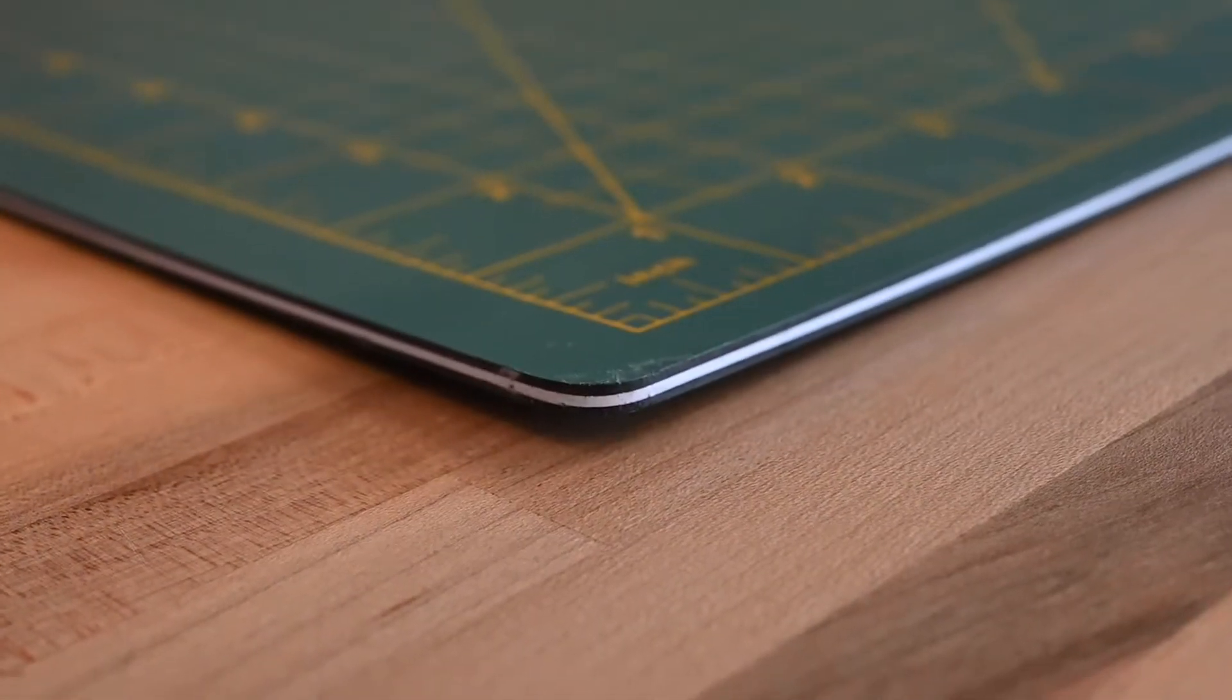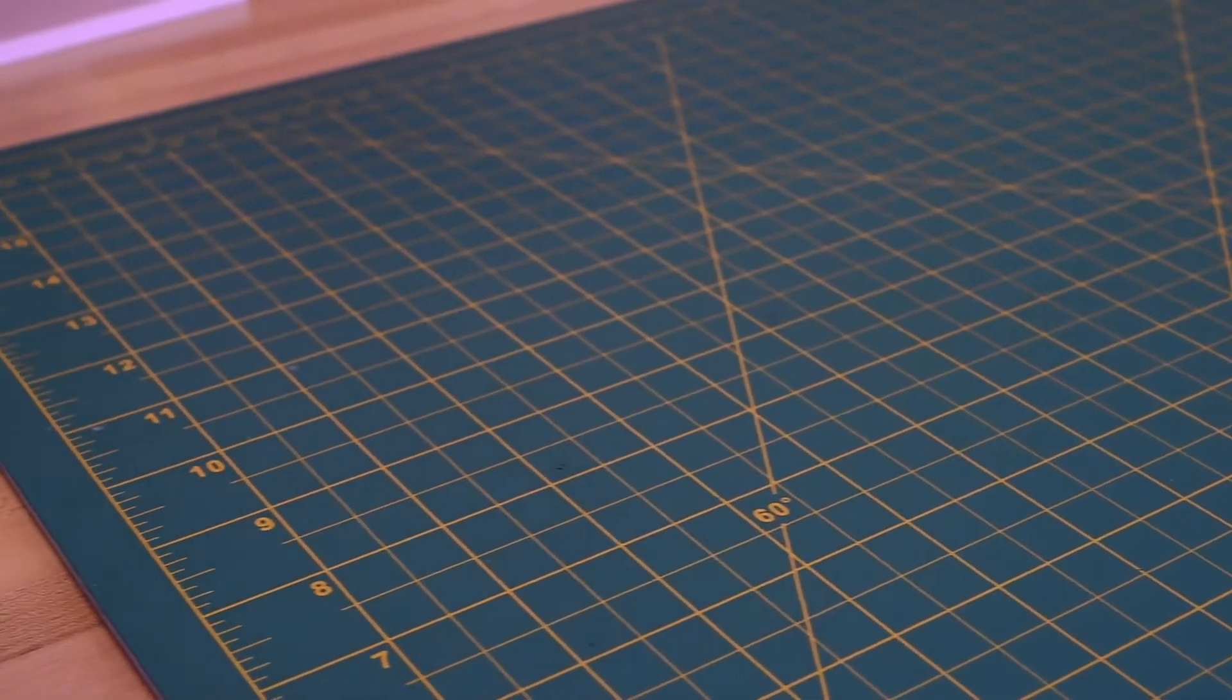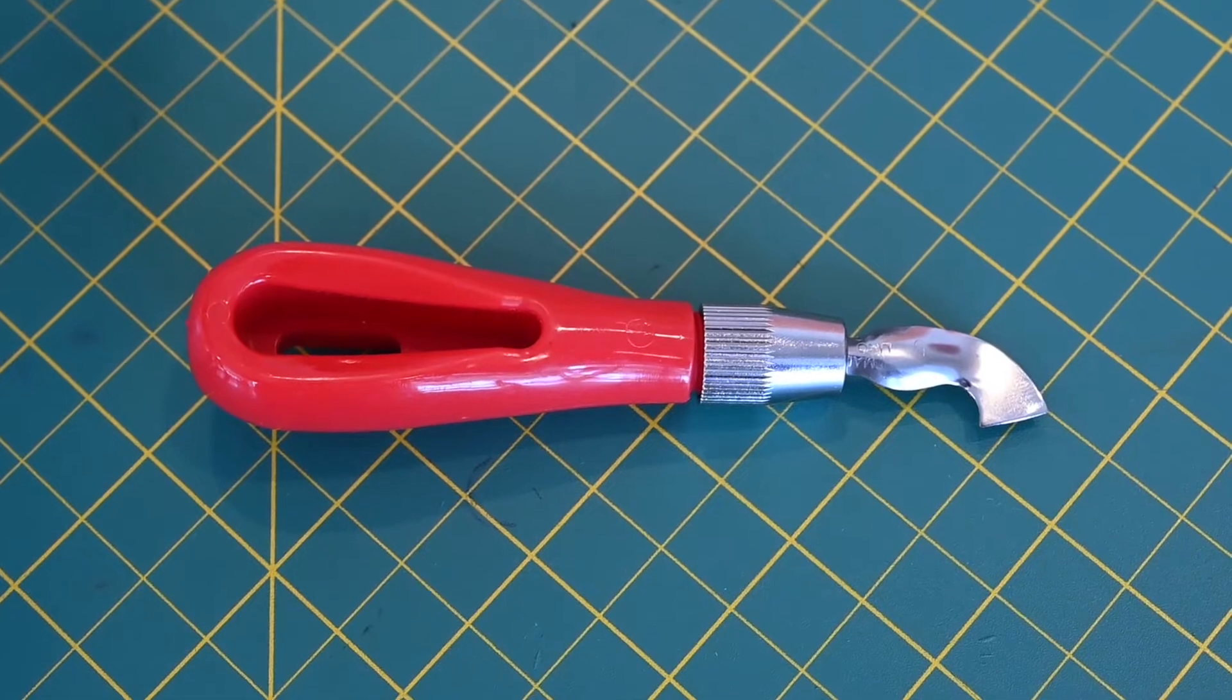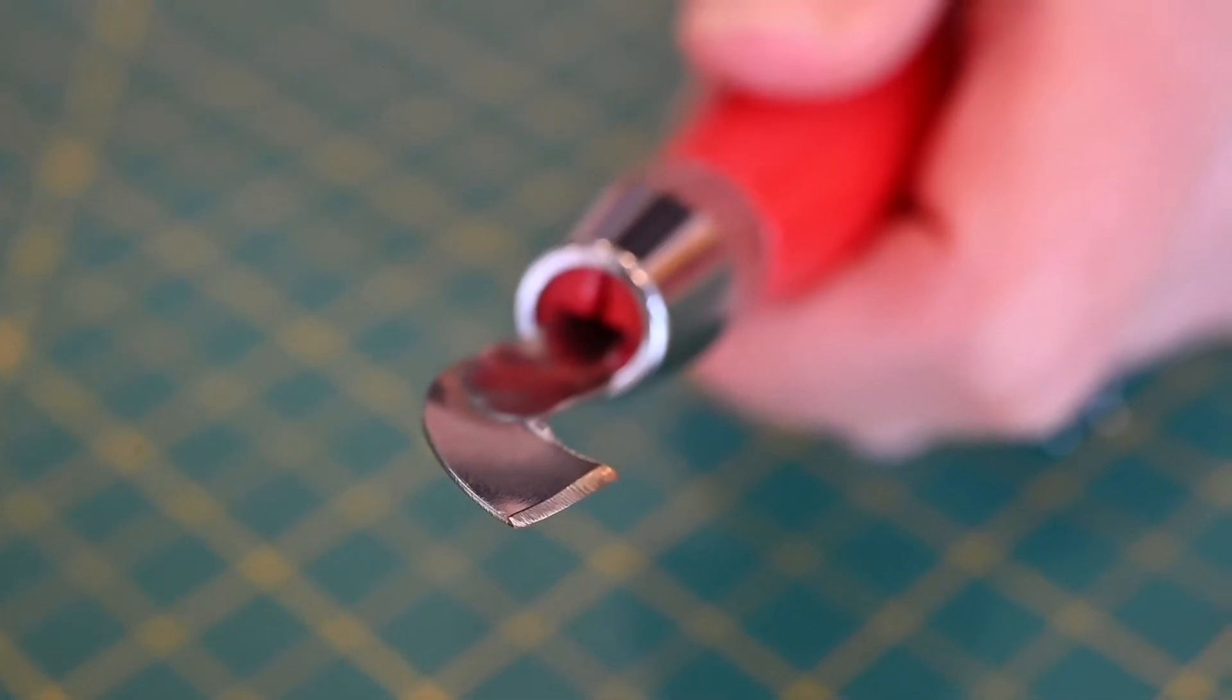Make sure you put down a cutting mat or cardboard first to protect your workspace. For project one, you'll want to use an X-Acto blade to cut out the shapes.